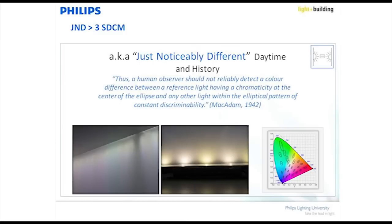There has been a lot of research, and we've focused on work done in the 1940s — in 1942 — by a gentleman called Arthur MacAdam. He found out that when you test two light sources and bring them closer and closer on a color chart, asking 'do you see a difference now?' every time, he drew an ellipse around each measurement result.